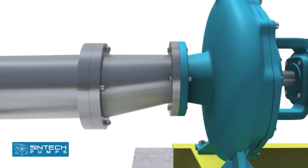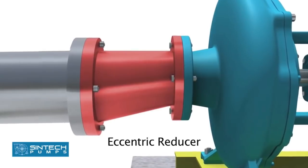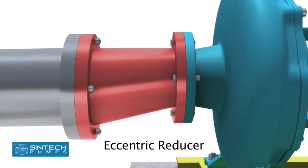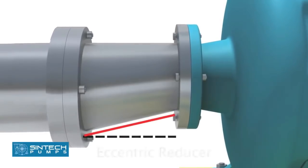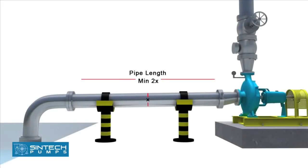The reducer joining the straight length of the pipe in the pump line should be an eccentric reducer with the inclined side of the reducer as the bottom side. The straight length of the pipe after the eccentric reducer should be two times the pipe diameter.